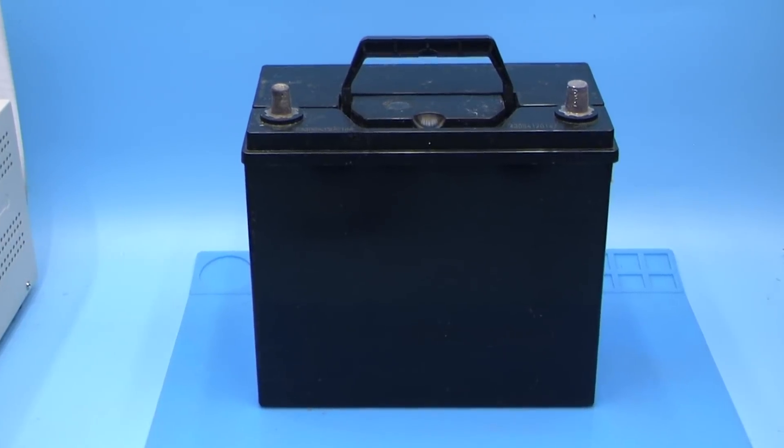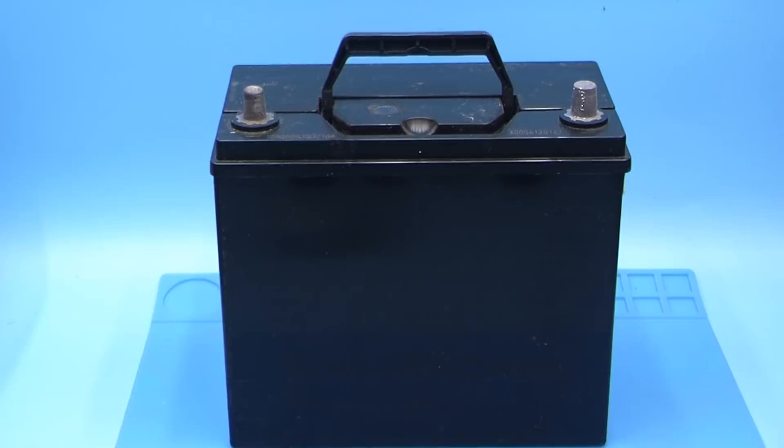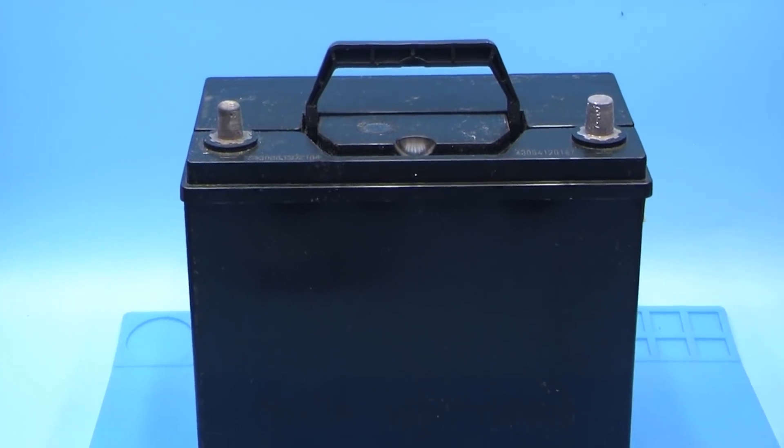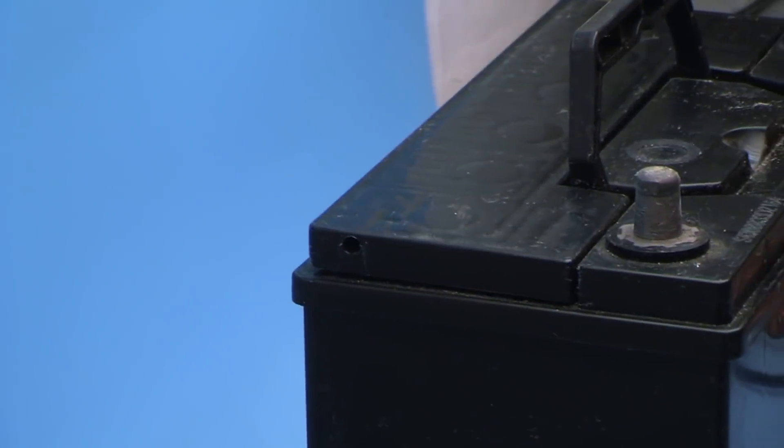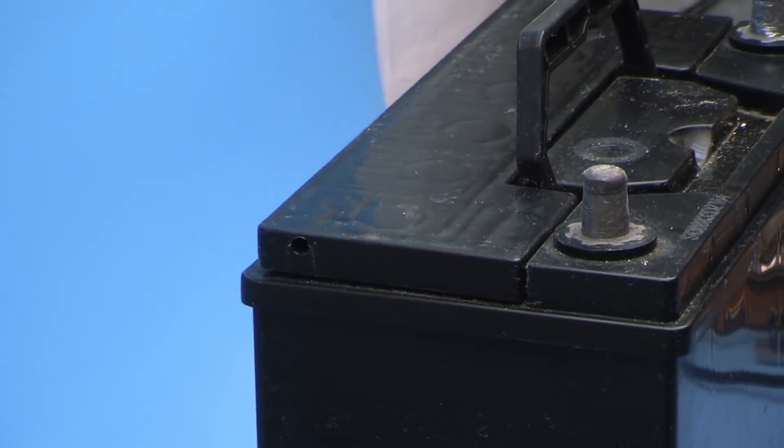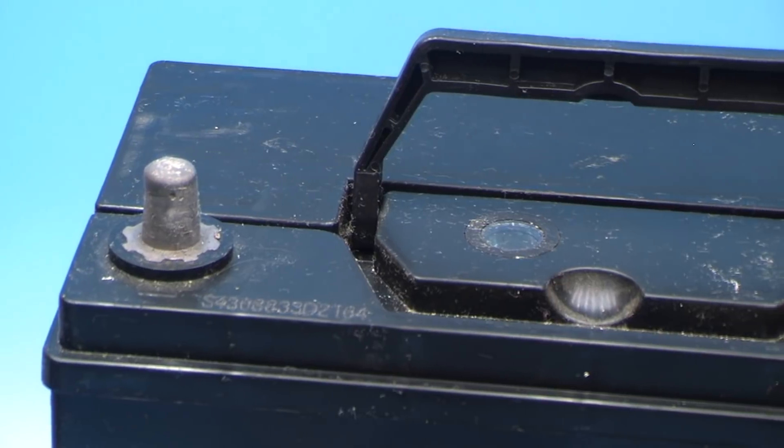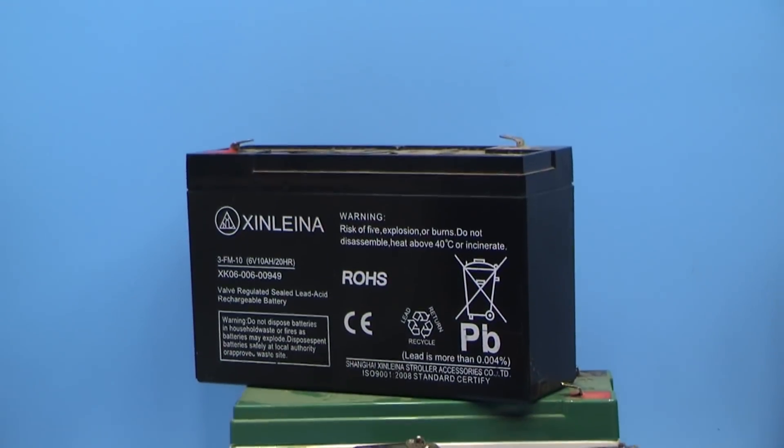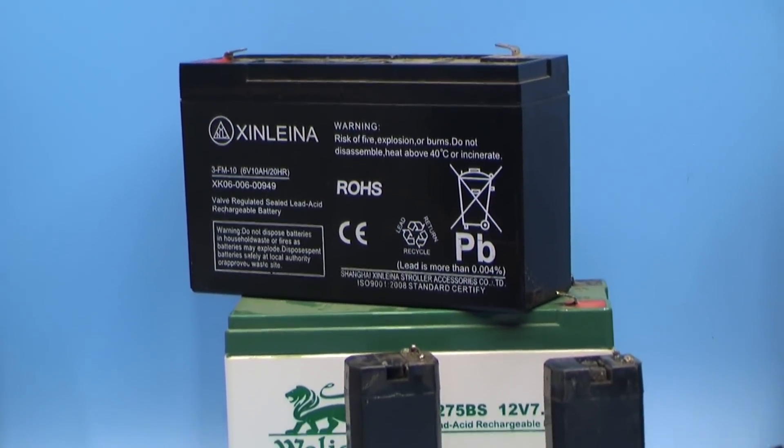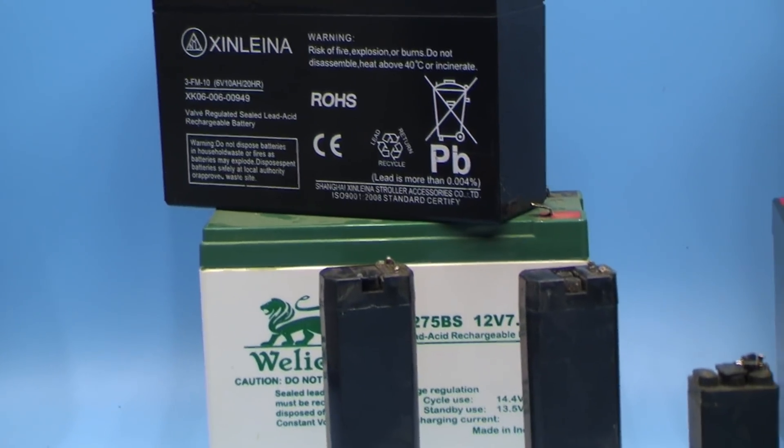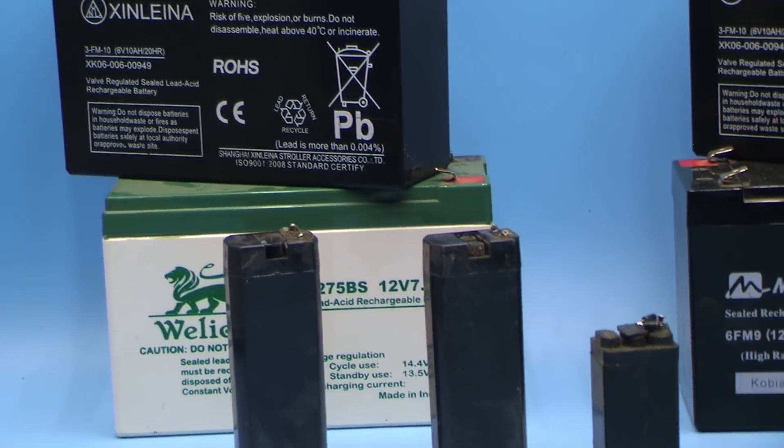Probably any driver faces a situation when the battery, which was unused for some time, can't give its nominal capacity, just turns the starter half a second then stops, but the voltage on it is normal. In this case, people usually say the battery doesn't hold a current. Everyone can face this. But why does it happen?